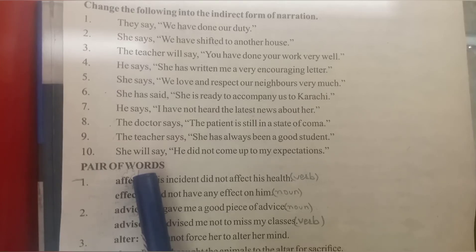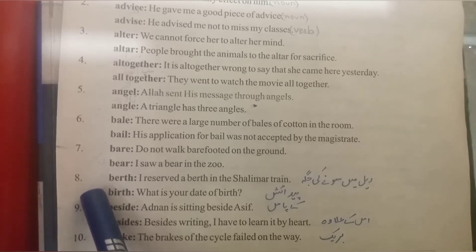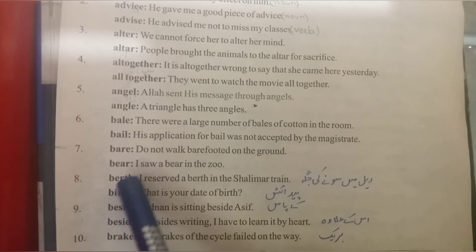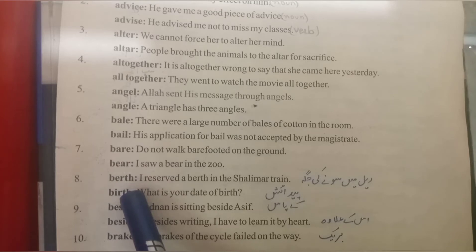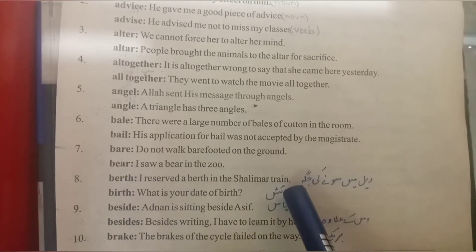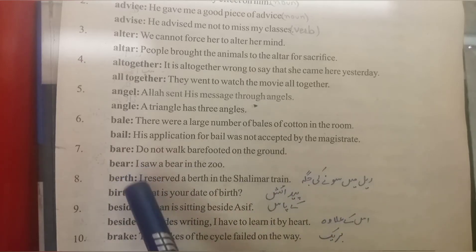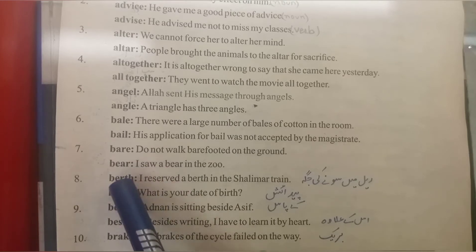Let's start today's lesson. Look at pair number eight: 'berth' and 'birth'. Both of these words have similar pronunciation. B-E-R-T-H, 'berth', means a sleeping place in a train (rail mein soni ki jaga). B-I-R-T-H, 'birth', means birth (paidaish). Although both words sound similar, they have different meanings.